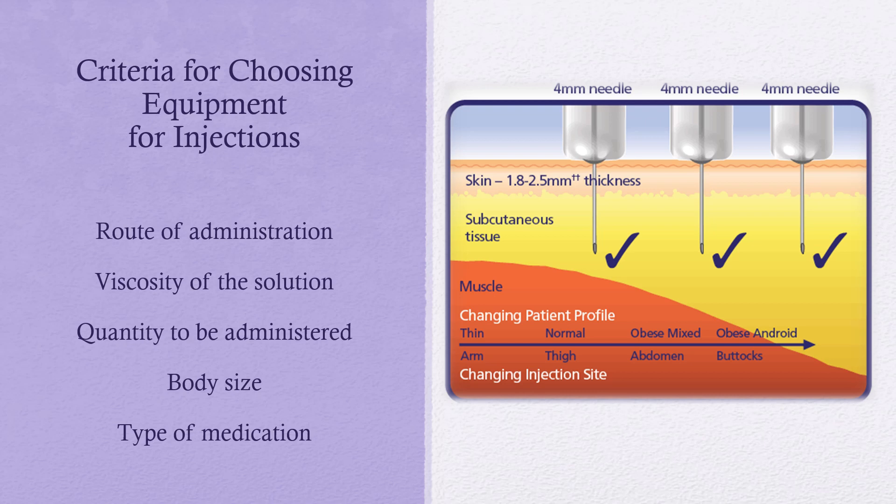The first thing we have to think about when we're giving our injections is making sure that we have all of the equipment that we need. We need to make sure we know the route of administration. We're going to go to the physician's orders, check the recommended route, and then go to the MAR to see which route we'll be administering the medication. If we give the medication in the wrong route, it could cause harm to our patient.